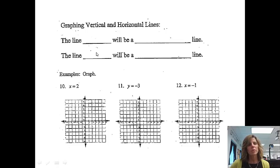At the end of this video, you should be able to graph vertical and horizontal lines. First of all, a vertical line is a line that goes straight up and down, and a horizontal line is a line that goes horizontal or left and right.